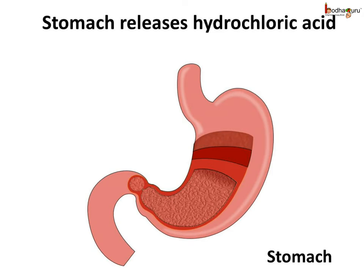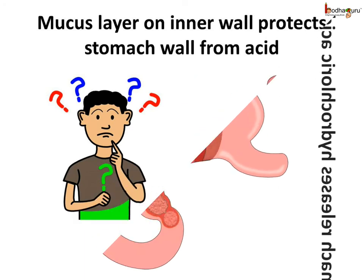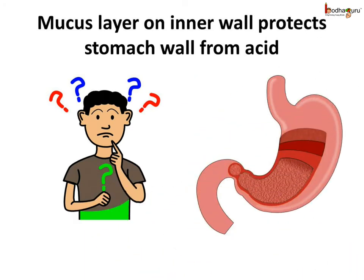The food is now in the stomach. The stomach is a thick-walled bag, and as you can see, its shape is like a flattened U. It receives food from the food pipe at one end and opens into the small intestine at the other end. The inner walls of the stomach secrete hydrochloric acid, which kills the microbes in the food and makes it acidic and ready for digestion. The inner lining of the stomach also secretes mucus, which protects the lining of the stomach from the acid.